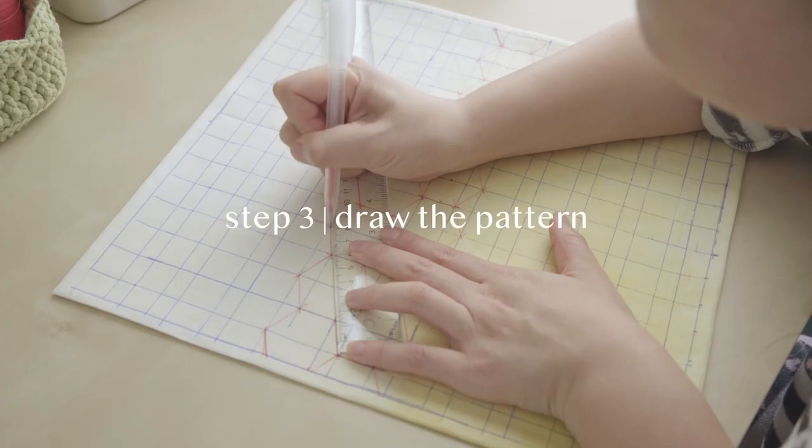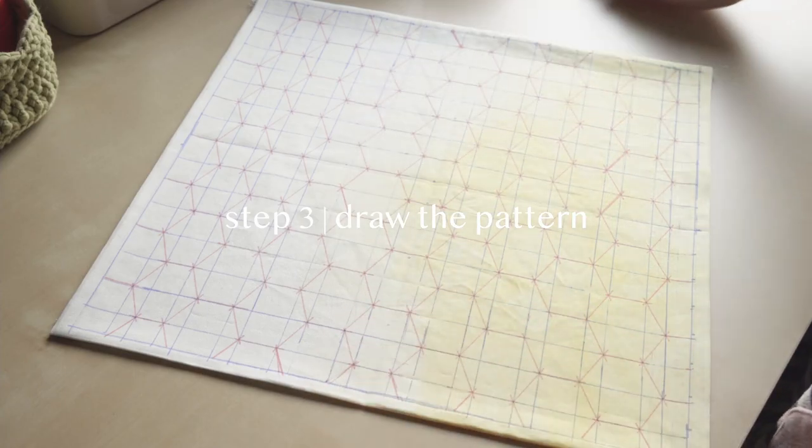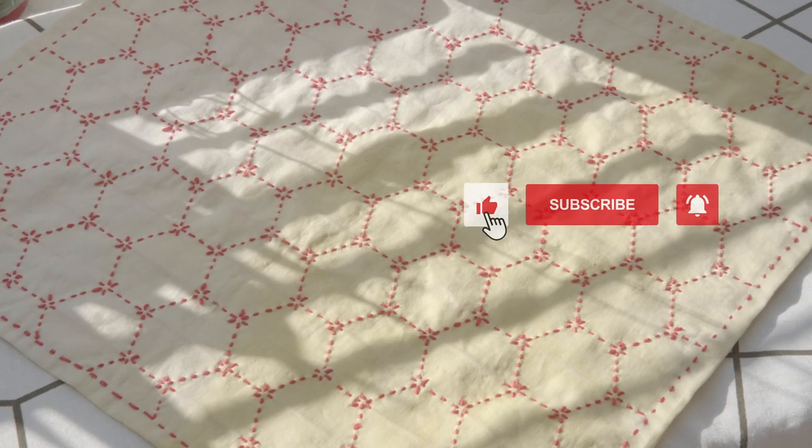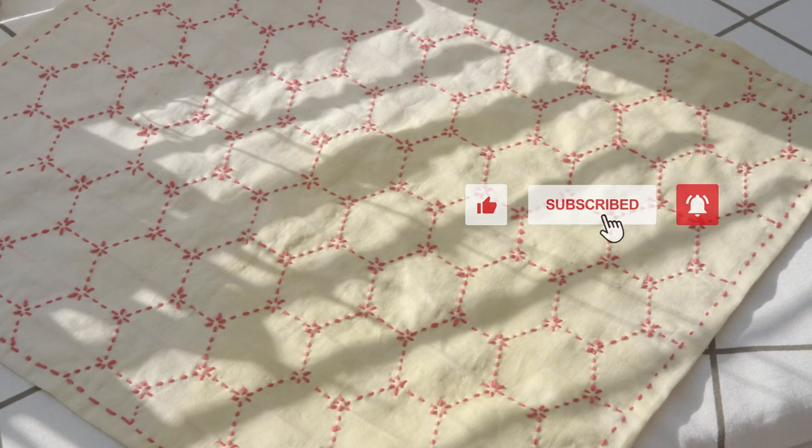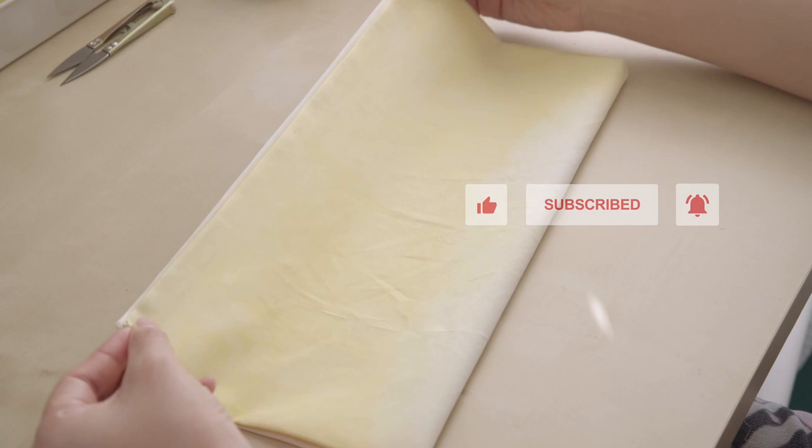Step three, draw the pattern. The pattern I like to show you today is called tsuno kiko horned tortoise shell pattern. To draw the pattern, first of all, I would fold the fabric twice to find the center point.